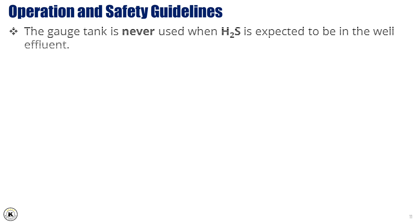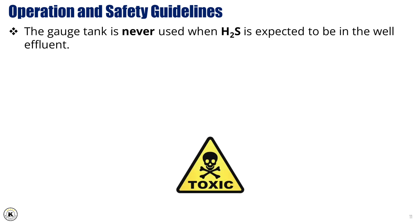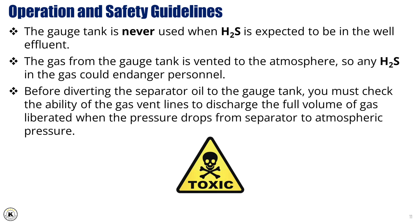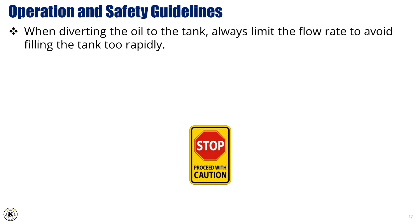Operation and safety guidelines. The gauge tank is never used when H2S is expected to be in the well effluent, as the gas from the gauge tank is vented to the atmosphere, and any H2S in the gas could endanger personnel. Before diverting the separator oil to the gauge tank, you must check the ability of the gas vent lines to discharge the full volume of gas liberated when the pressure drops from separator to atmospheric pressure. When diverting the oil to the tank, always limit the flow rate to avoid filling the tank too rapidly, which can be dangerous and difficult to control.